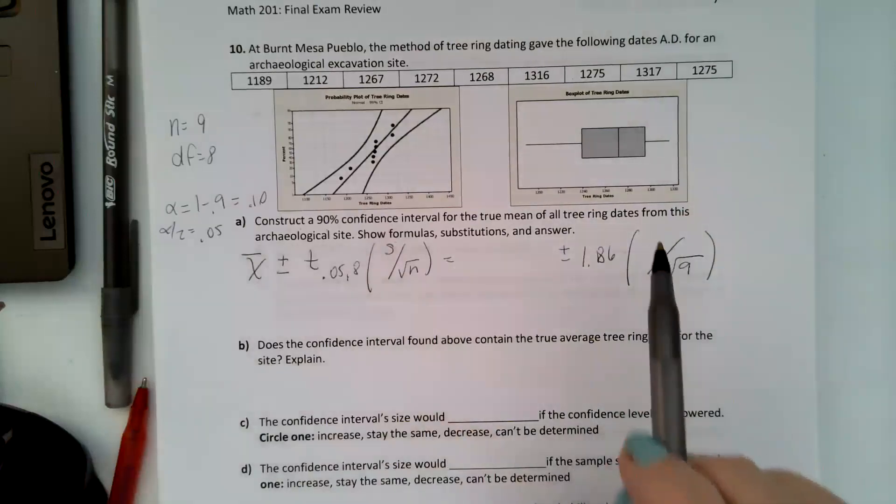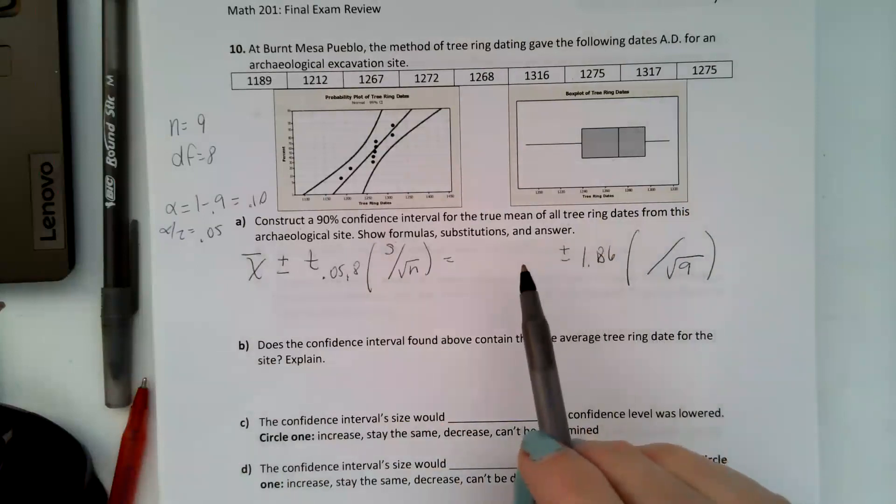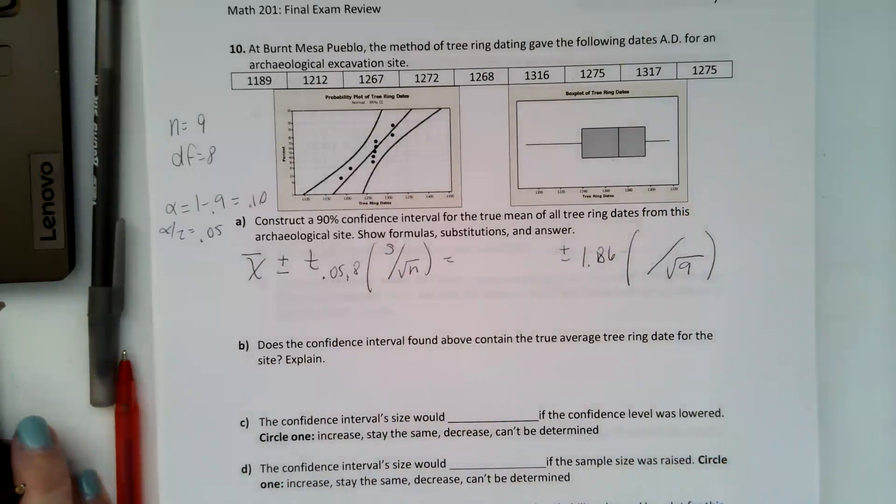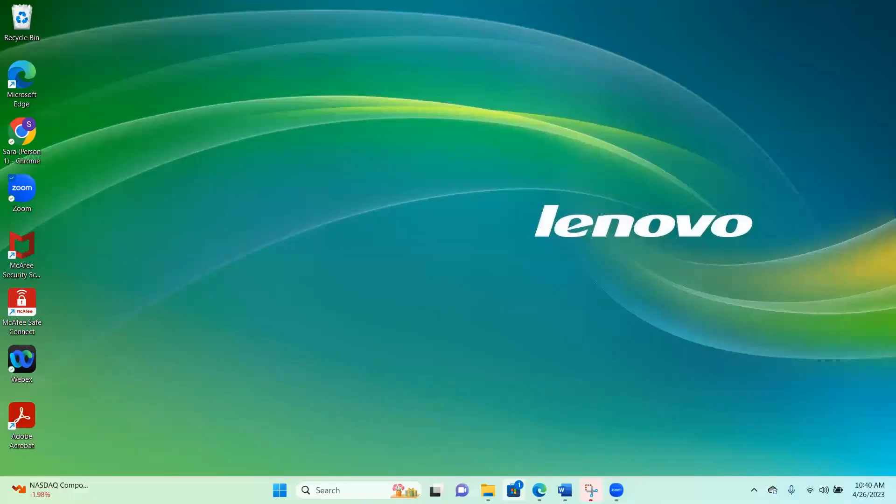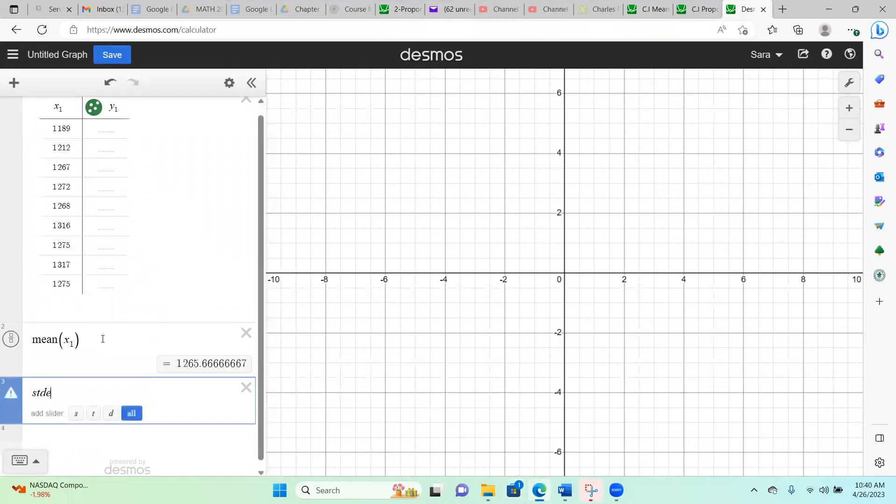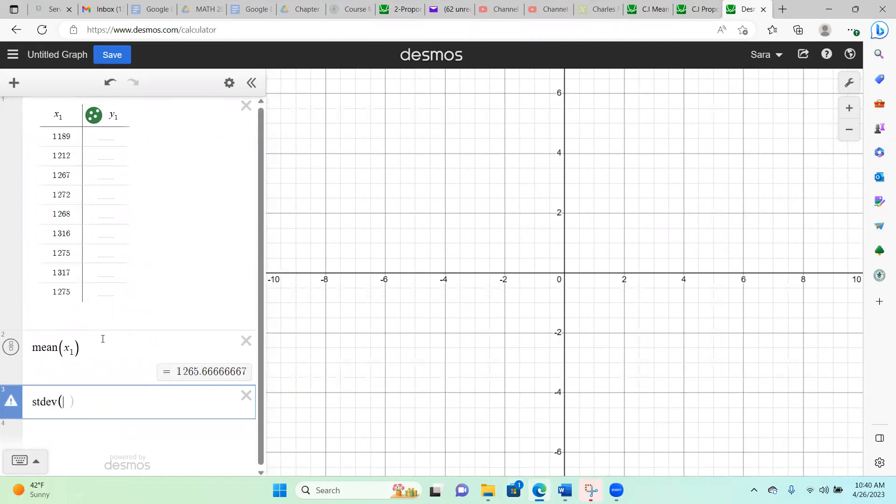Now we can also use our program in Desmos to check what we come up with. So let's go ahead and move over to Desmos, put our data into a table. That's what I did, and then I'm going to find the mean of x1 and because it's a sample it's just stdev of x1. So I'm using 1265.67 for my mean and my standard deviation is going to be 42.05.